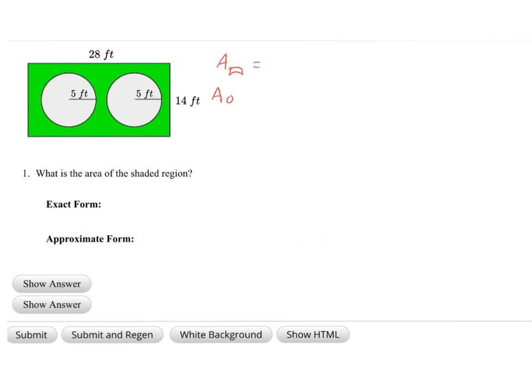In the first part, the area of the rectangle is base times height. The area of the circle is pi r squared.